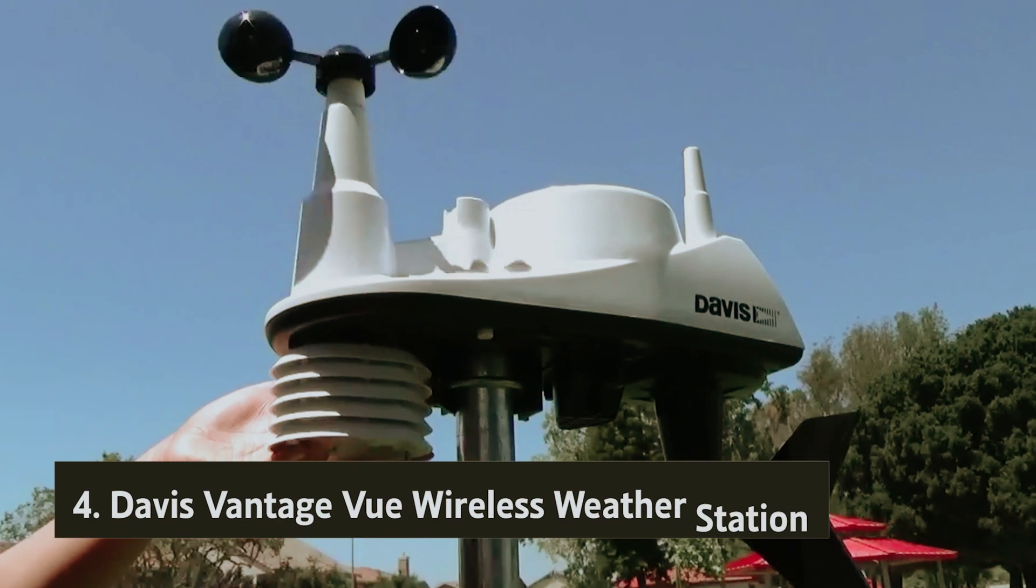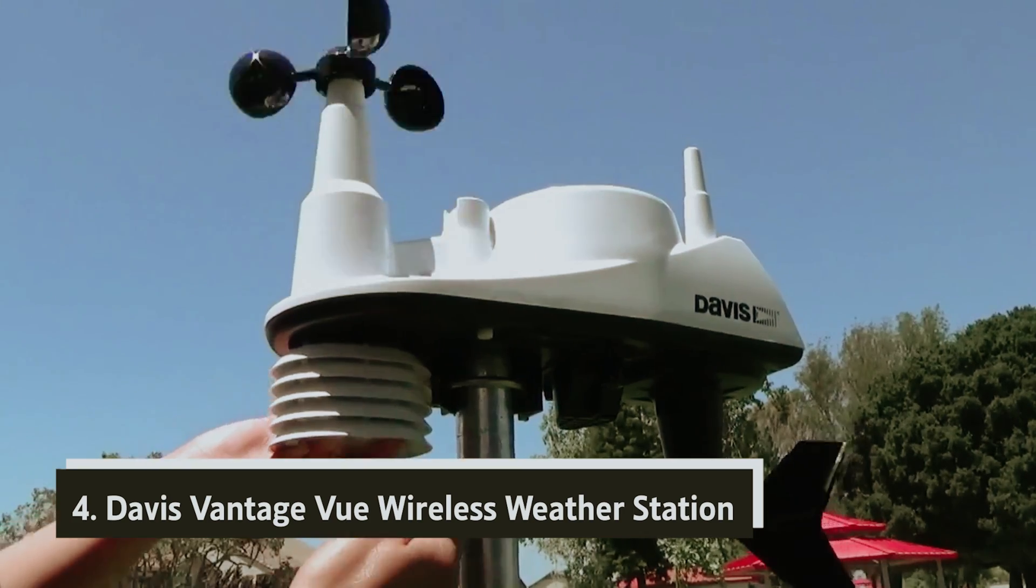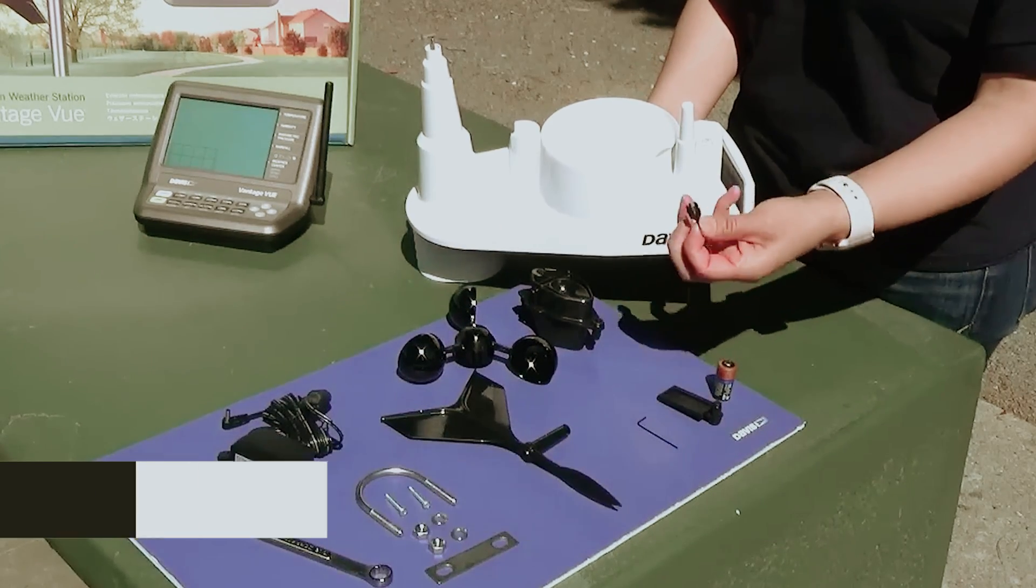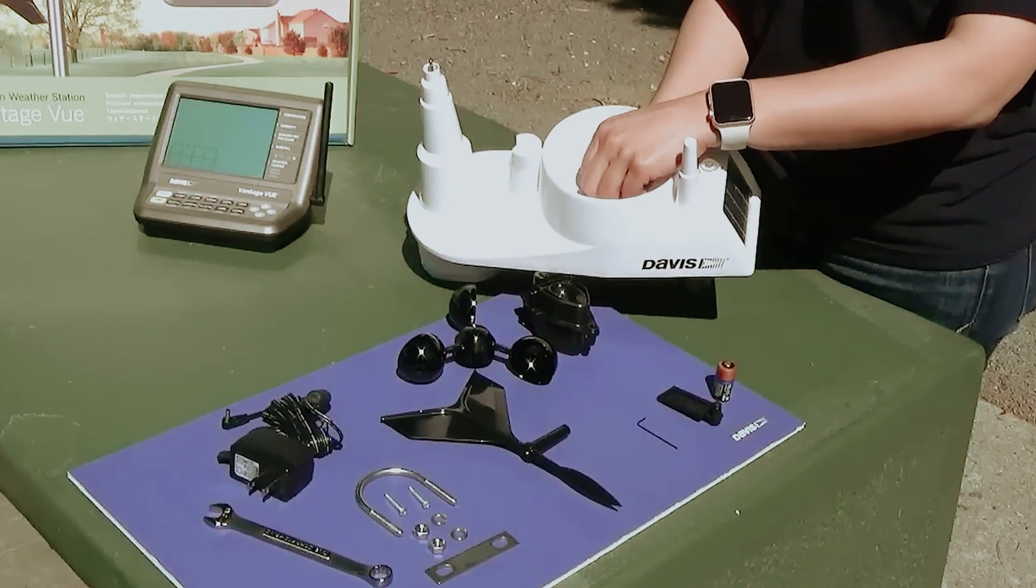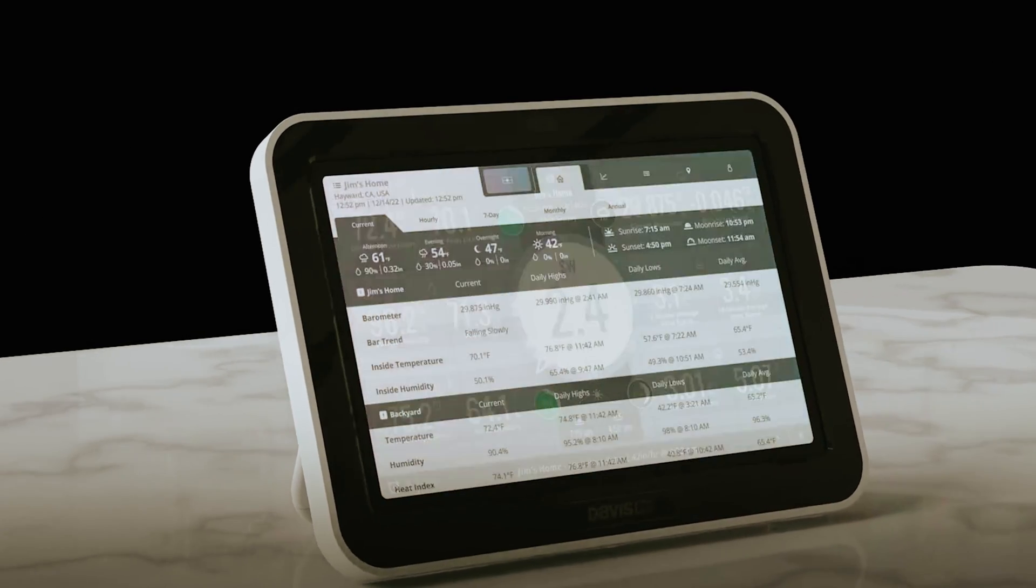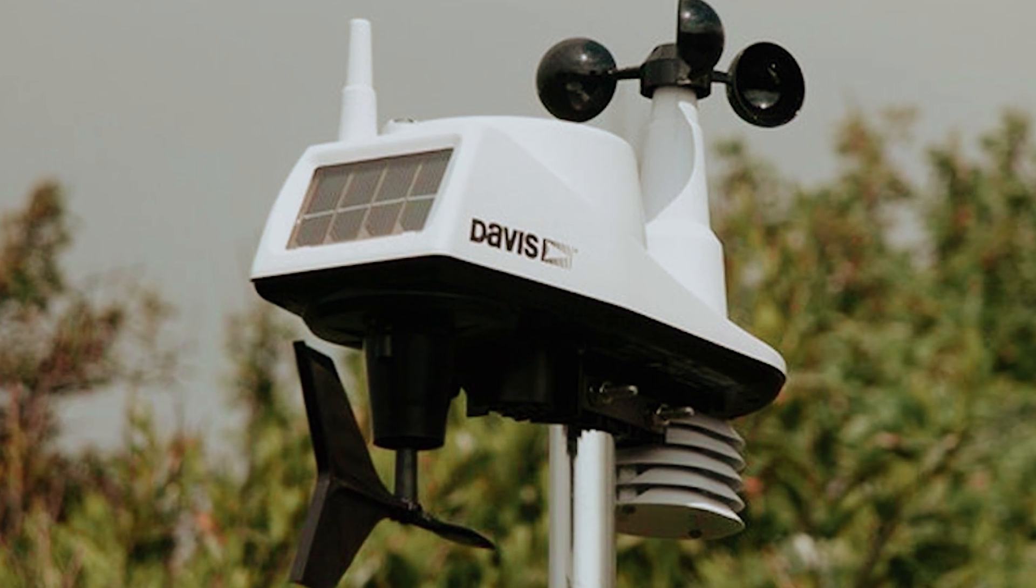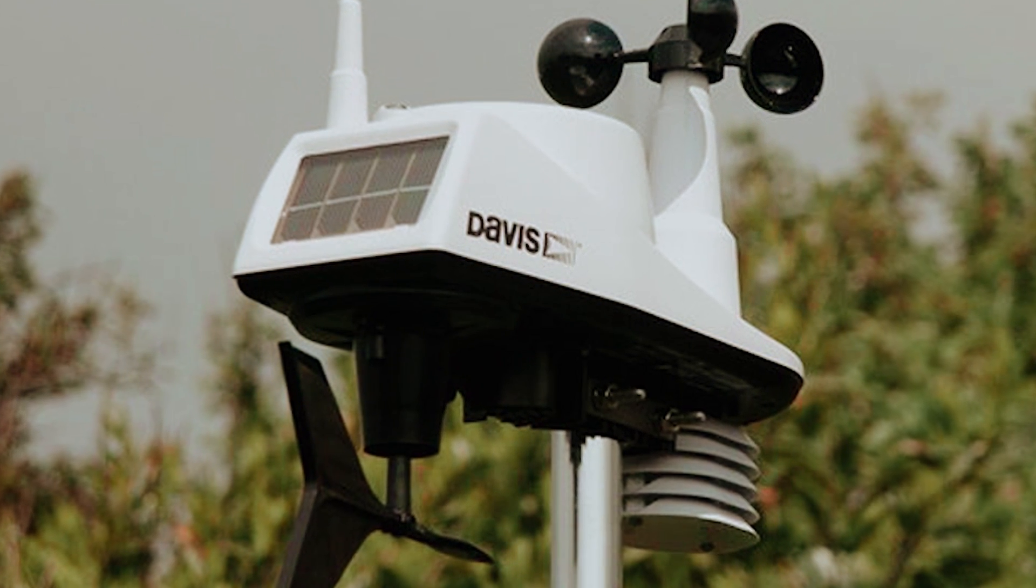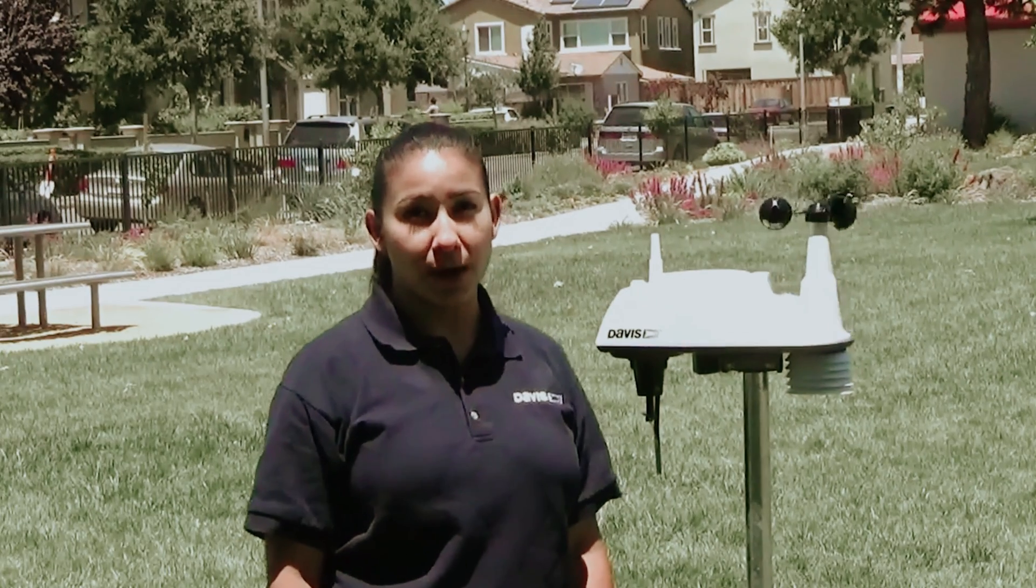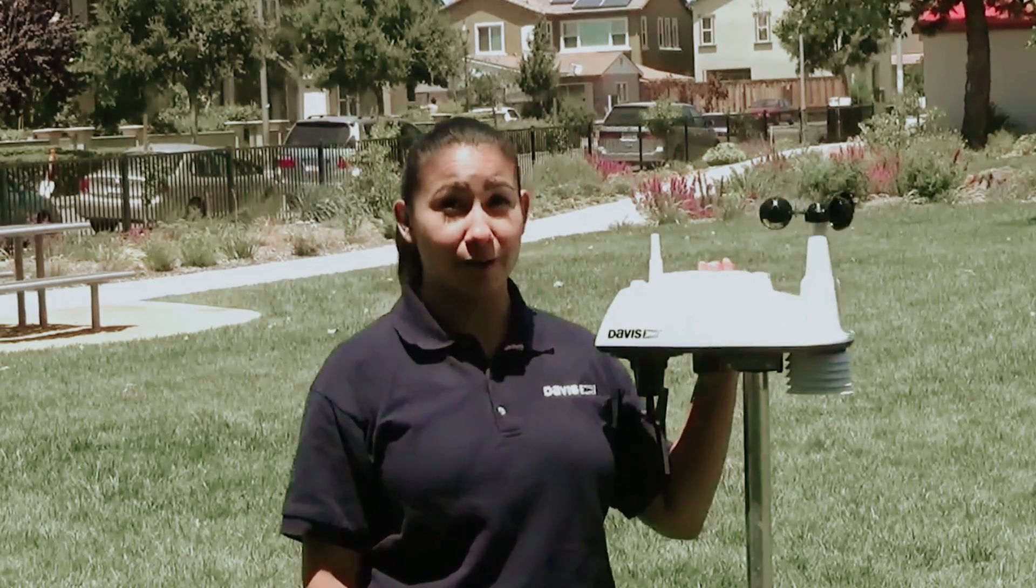At number four, Davis Vantage View wireless weather station. The Davis Instruments Vantage View has a rich history that dates back two decades, and during much of that time, it utilized the same console, which, while functional, felt a bit out of touch with modern trends even when it first launched. However, there's good news for you. The introduction of the WeatherLink console marks a significant upgrade, aligning the Vantage View with the standards of today's weather technology.